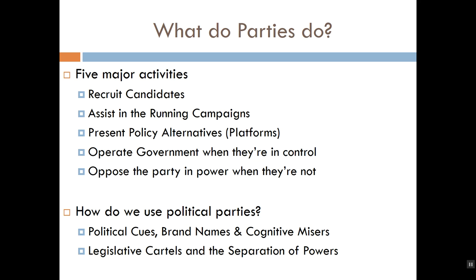Now let's talk about the main activities of any functioning political party in the United States — there are five. The first is to recruit candidates. They need to find people to run for office and convince people currently in office to stay. Parties frequently try to keep incumbents in office because incumbents are much more likely to win if they run for re-election than any candidate running against an incumbent or for an open seat.